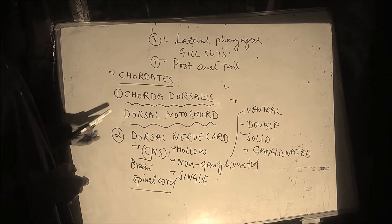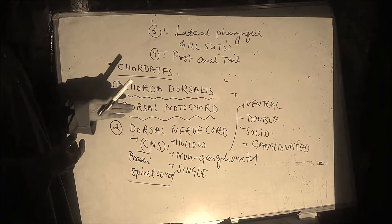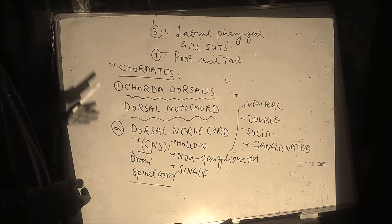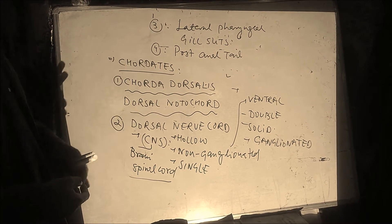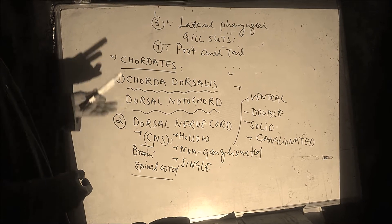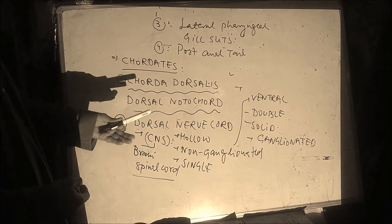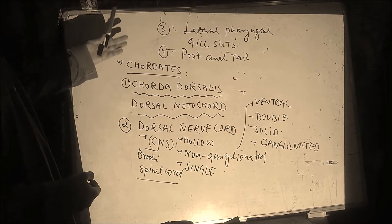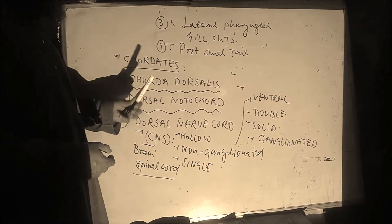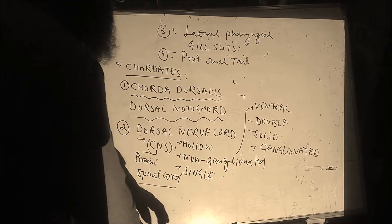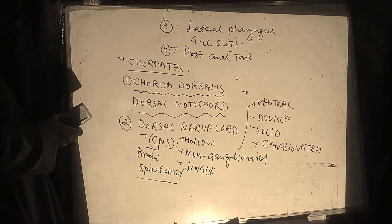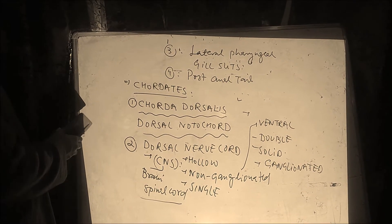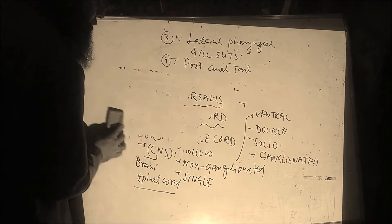To conclude: in Chordates, there are four diagnostic characters — the presence of Dorsal Notochord (absent in Non-Chordates), the presence of a Dorsal Nerve Cord (which in Non-Chordates is ventral, double, solid, and ganglionated), Lateral Pharyngeal Gill Slits, and a Post-Anal Tail present in Chordates. On this basis, Kingdom Animalia is divided into two categories: Chordates and Non-Chordates.